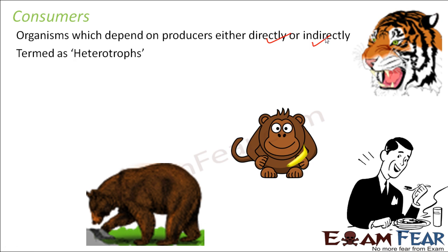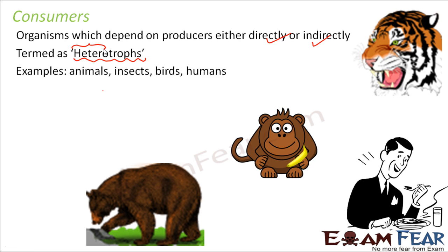So all consumers will directly or indirectly depend on producers, that is, plants. Consumers are also known as heterotrophs. Hetero means others — these organisms are dependent on others for their food. Similarly, producers are known as autotrophs. Auto means self — they are dependent on themselves. Examples of consumers are animals, insects, birds, and human beings. In fact, except plants, all other organisms will not fall under the producer category. However, quite a few organisms fall under the category of decomposers, which we will see a little later.